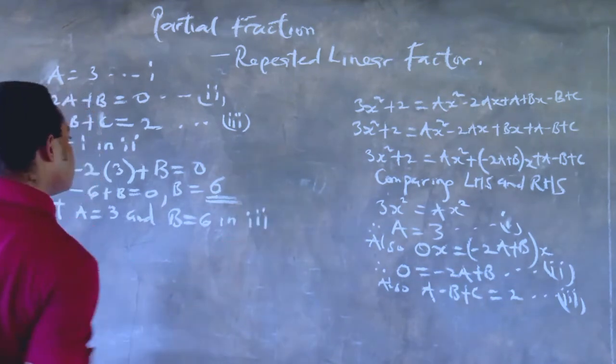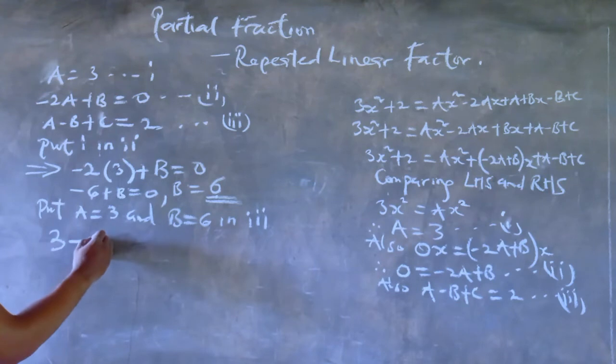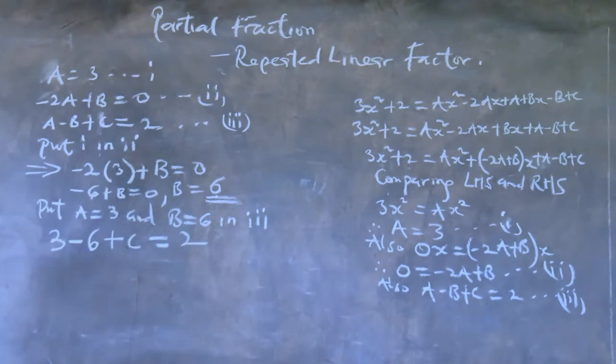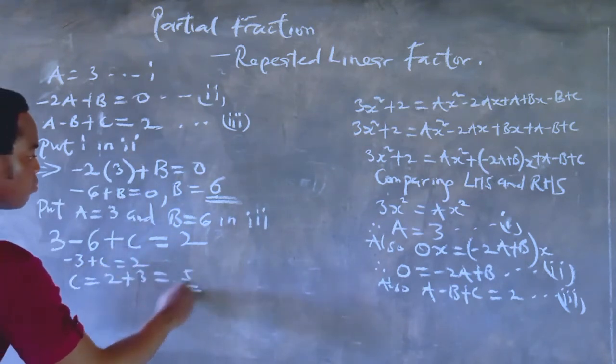So then we also put A equals 3 as well. So we have 3 minus 6 and plus C equals 2. 3 minus 6 is -3, and plus C equals 2, so that C equals 2 plus 3, which is 5.